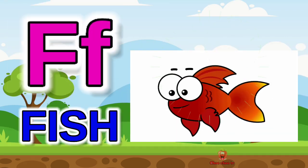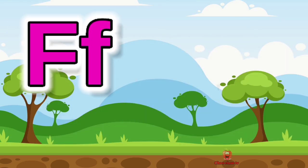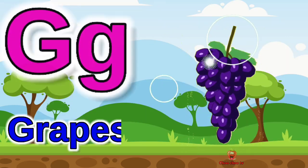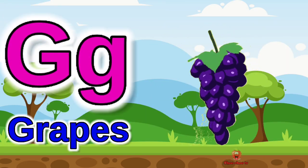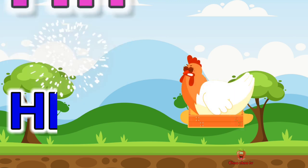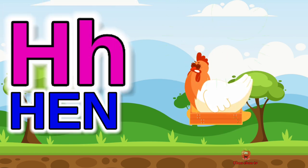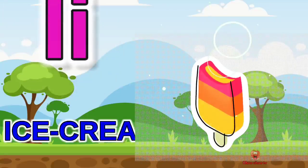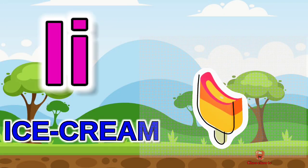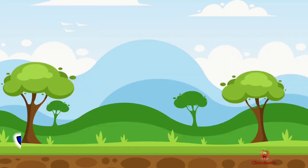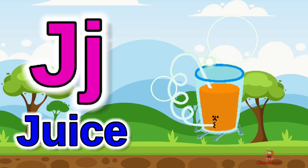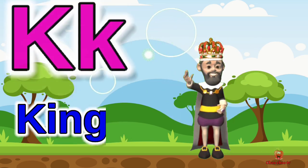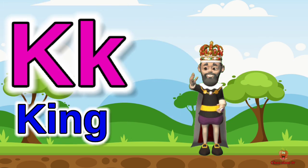F for fish, G for grapes, H for hen, I for ice cream, J for juice.